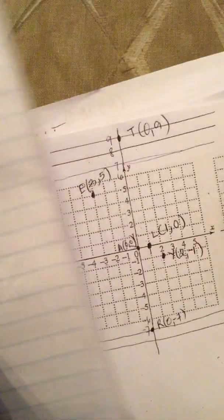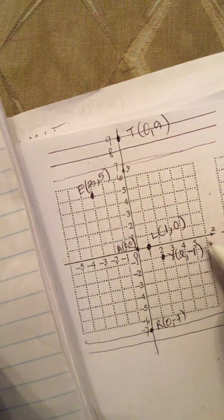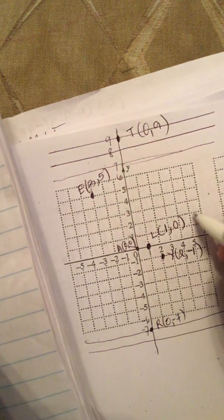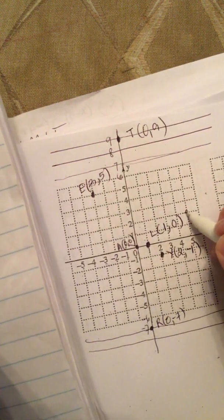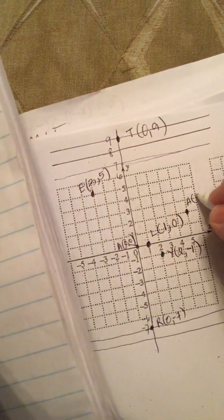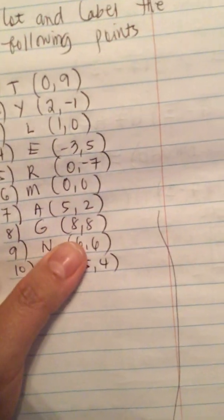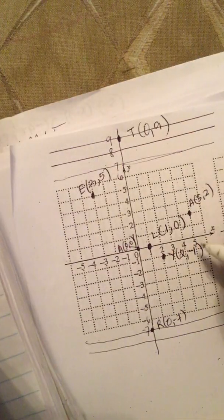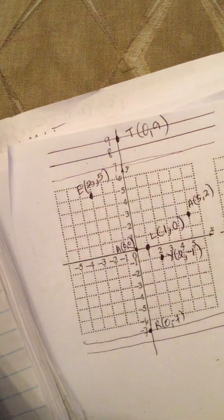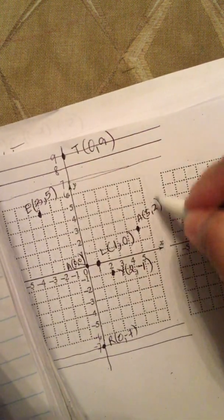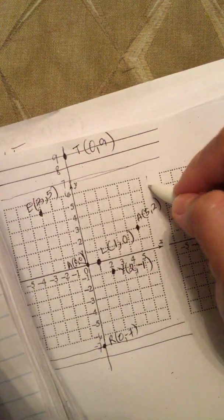Next one is five comma two. So five, and then go up two — right here. So this is the point five comma two. Next one is eight comma eight, so we need more squares here. Five, six...